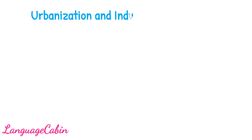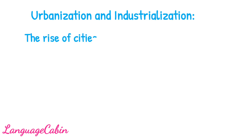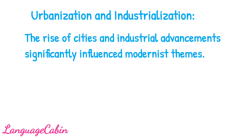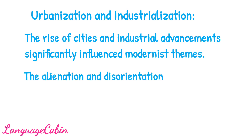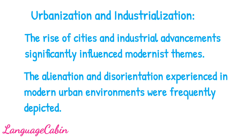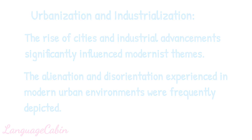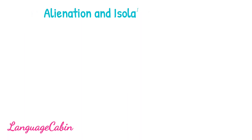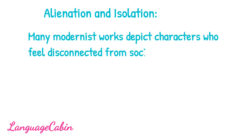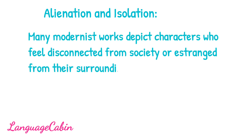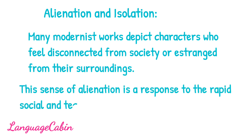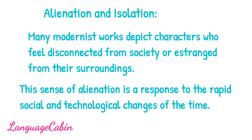Urbanization and industrialization. The rise of cities and industrial advancements significantly influenced modernist themes. The alienation and disorientation experienced in modern urban environments were frequently depicted. Many modernist works depict characters who feel disconnected from society or estranged from their surroundings, as a response to the rapid social and technological changes of the time.